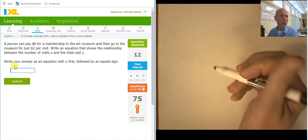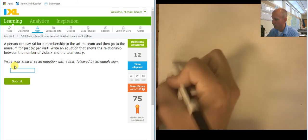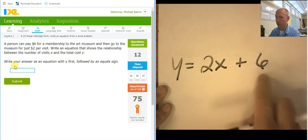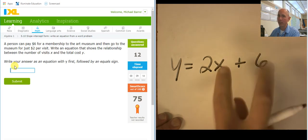Six bucks for membership, and then two dollars per visit. So, y equals two dollars per visit plus six dollars just to get the membership. So, even if you never go, you're going to spend six bucks. You go once, you pay eight dollars. You go twice, you pay ten dollars.